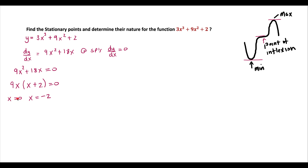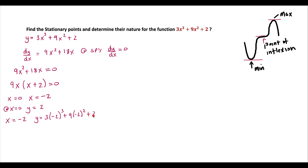To get the y-values for the stationary points, we substitute these x-values into the original function. At x = 0, y = 2, because substituting 0 gives 0 for the first two terms, leaving only 2. At x = −2, substituting into the original function gives 3(−2)³ + 9(−2)² + 2, which comes out to be 14. So we now have two stationary points.